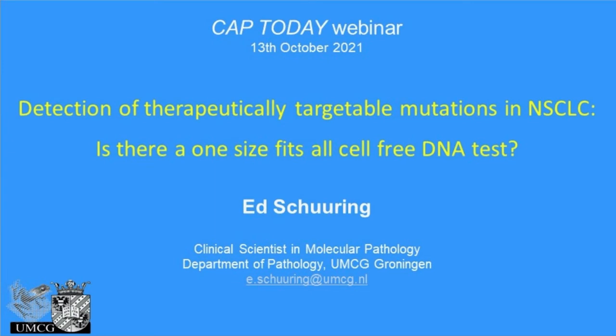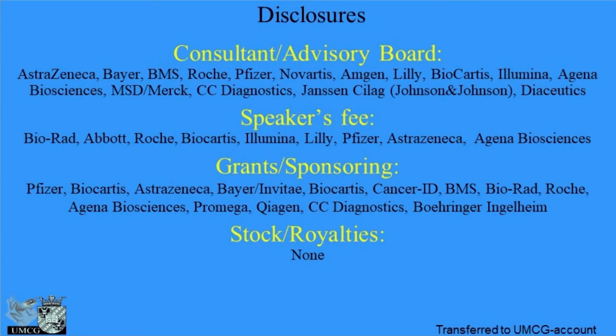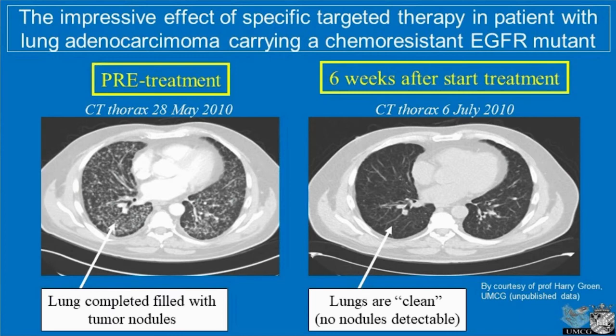One of these is the use of liquid biopsy, as will be the subject of today. More than 15 years ago, there was a patient described with lung cancer that was treated with targeted therapy, one of the first ones in lung cancer. Here's an example from our institution: on the left-hand slide, a CT scan shows a lot of tumor cells. These patients were treated with EGFR-targeted therapy, the tumor was EGFR receptor mutation positive, and in six weeks most of the cancer cells were gone.